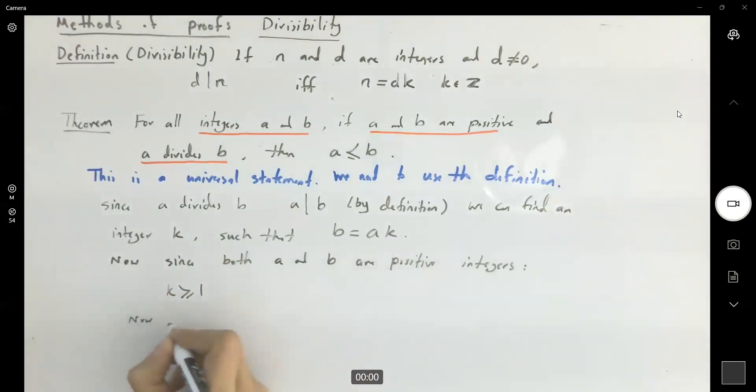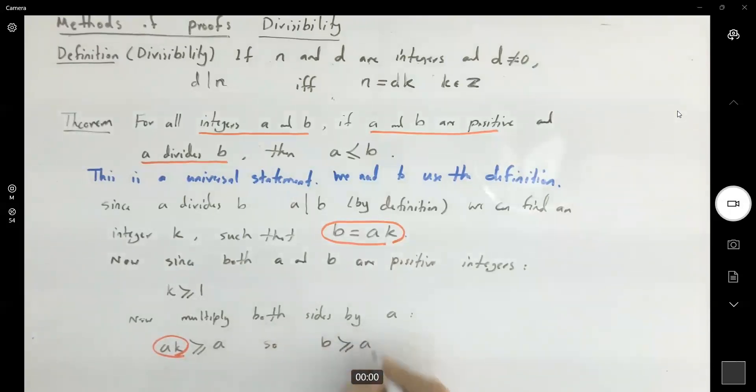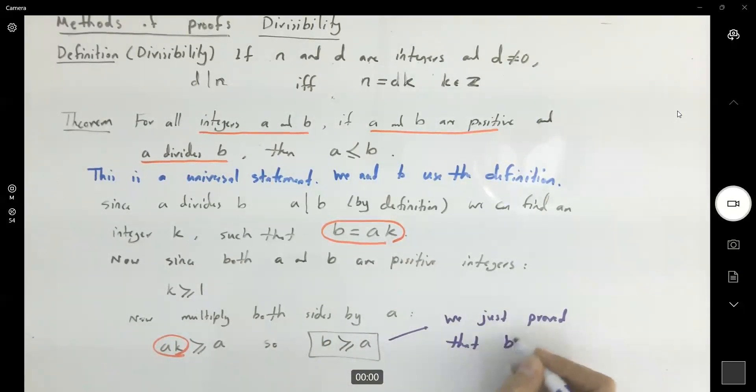k must be larger than or equal to one. Now multiply both sides by a. So ak is larger than or equal to a. But what is ak? ak is equal to b. So we just proved that b is larger than or equal to a. And we are done with the proof.